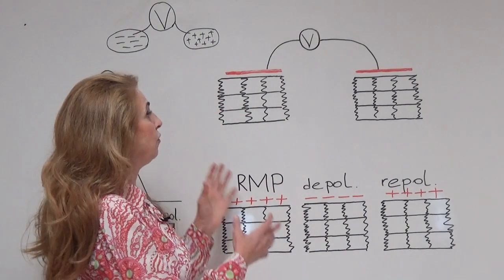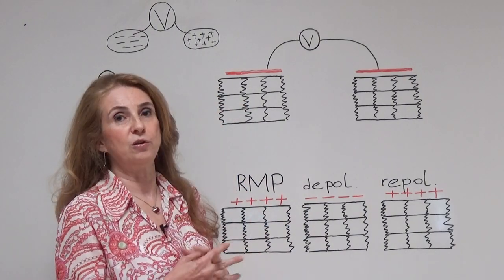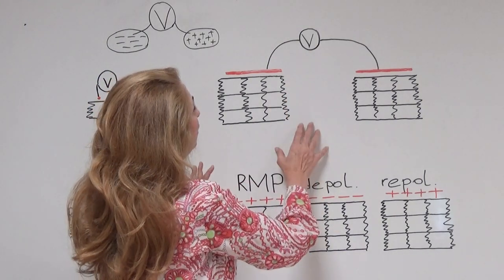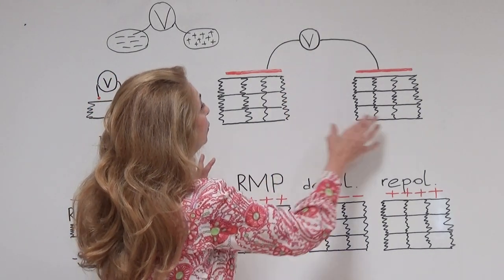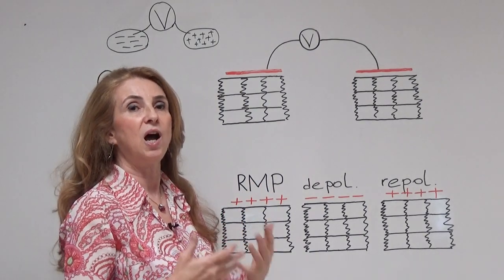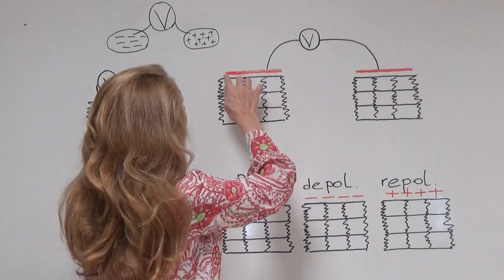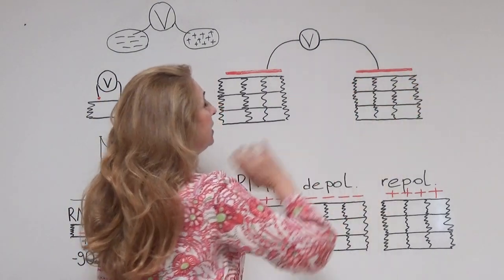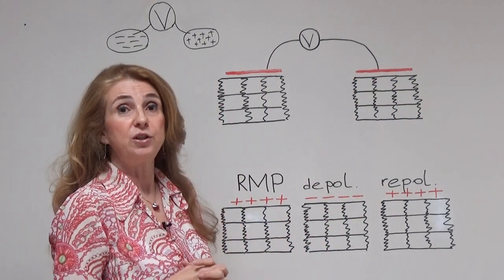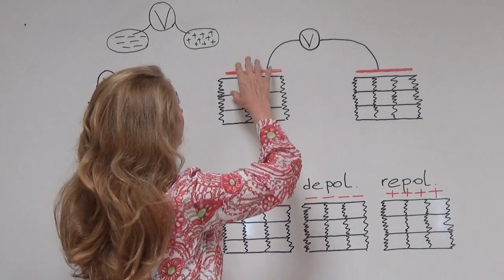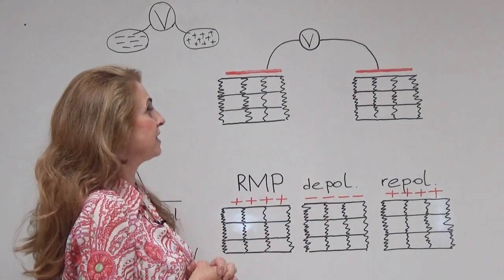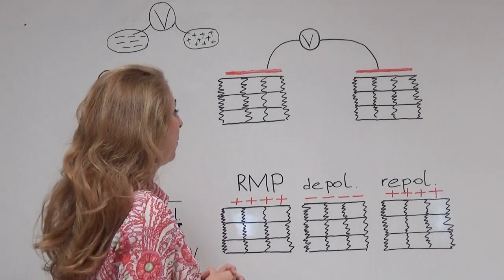Let us move on to extracellular recordings. We see here a voltmeter measuring from two groups of cells. Because the groups of cells cover a larger area, we need larger electrodes, each placed at one of the two regions we are going to compare.